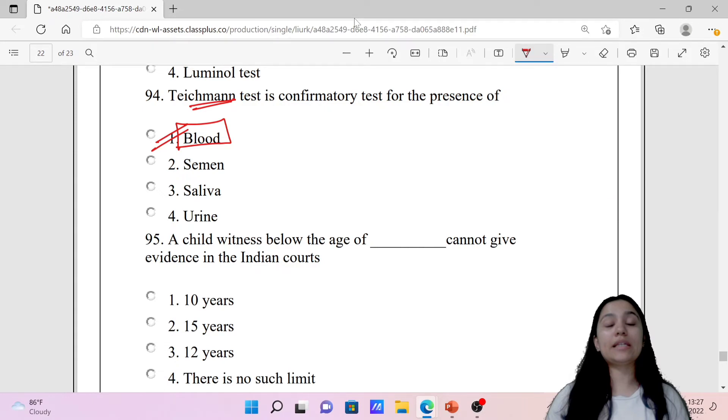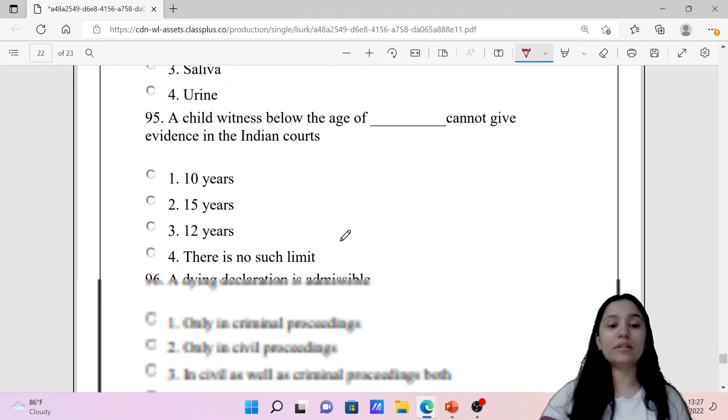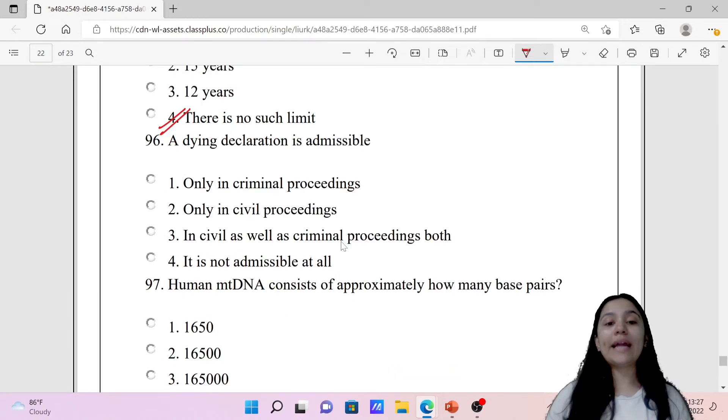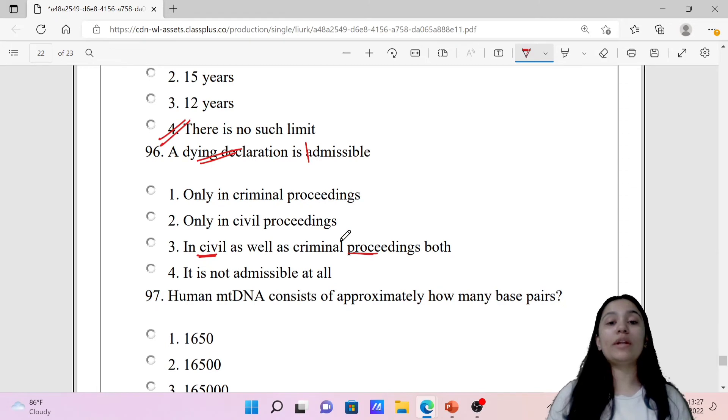A child witness belongs to the age blank, cannot give evidence in Indian courts. We have already discussed this. There is no such limit, so option four is the correct option. Next question: A dying declaration is admissible only in criminal proceedings, only in civil proceedings, in civil as well as criminal proceedings both, or not admissible at all. Dying declaration is of course admissible and acceptable in court, and it is important and admissible in both civil and criminal proceedings.